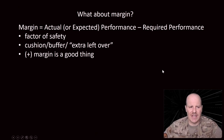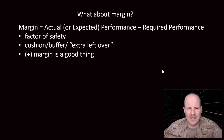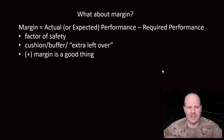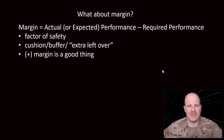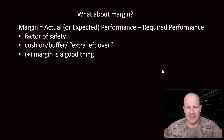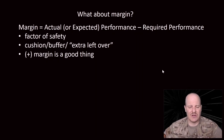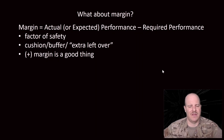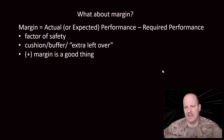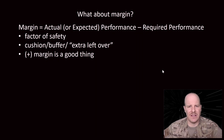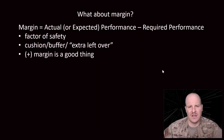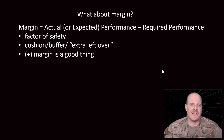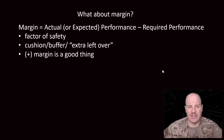Let's talk about margin before we wrap up. When we talk about margin, you can think about how much extra or how much buffer you have left over. For example, your mom gives you $10 to go to the store to buy milk. Milk costs $3. Since milk is only $3 and you have $10, your extra leftover would be $7 — so you'd have a $7 margin in that case.